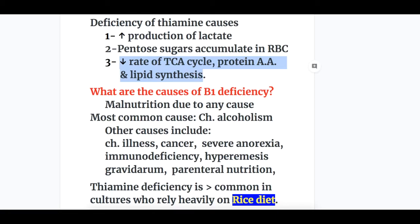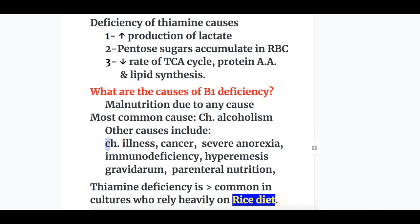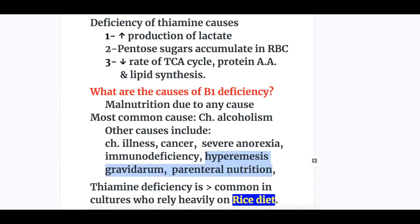What are the causes of B1 deficiency? Malnutrition due to any cause — the most common cause is chronic alcoholism. Other causes include chronic illness, cancer, severe anorexia, immunodeficiency, hyperemesis gravidarum, and patients on chronic parenteral nutrition. Thiamine deficiency is more common in cultures that rely heavily on a rice diet.